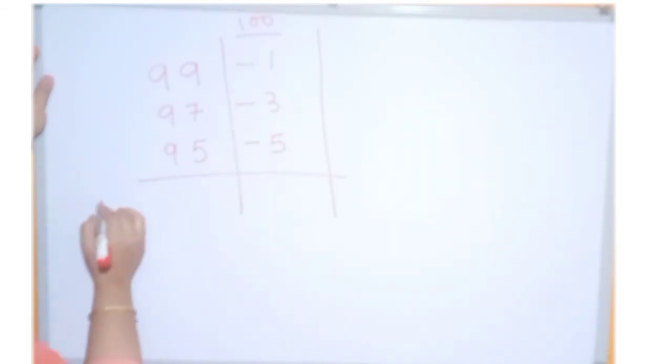Take any one number. So, 95 we are taking plus minus 3 plus minus 1. Okay. So, 95 minus 3 will get 92. 92 minus 1 will get 91.